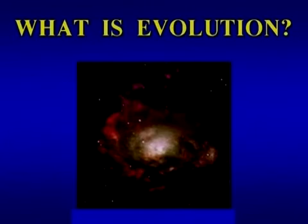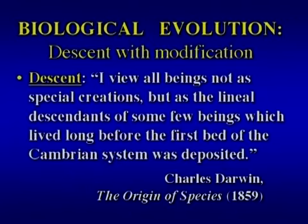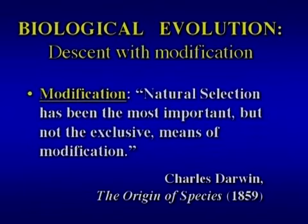I'm going to talk about evolution today, and one thing I have to do is define what I mean by that. It has many meanings — one of them is cosmic evolution, the history of the universe — but I'm going to specifically talk about biological evolution, which Charles Darwin himself defined as descent with modification. He viewed all beings not as special creations, but as lineal descendants of some few beings that lived in the distant past. Modification, Darwin felt, was due primarily, though not exclusively, to natural selection or survival of the fittest, which acted on random variations in a population to change it.